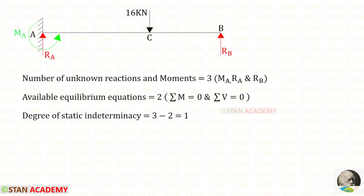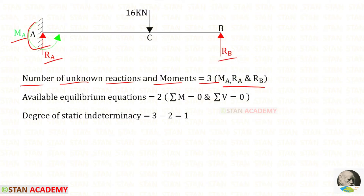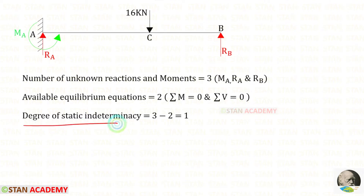Now let us find the degree of static indeterminacy. In this beam the number of unknown reactions and moments are 3: the moment MA, and the vertical reactions RA and RB. The available equilibrium equations are 2: sigma M = 0 and sigma V = 0. The degree of static indeterminacy is equal to 3 minus 2, which gives 1.